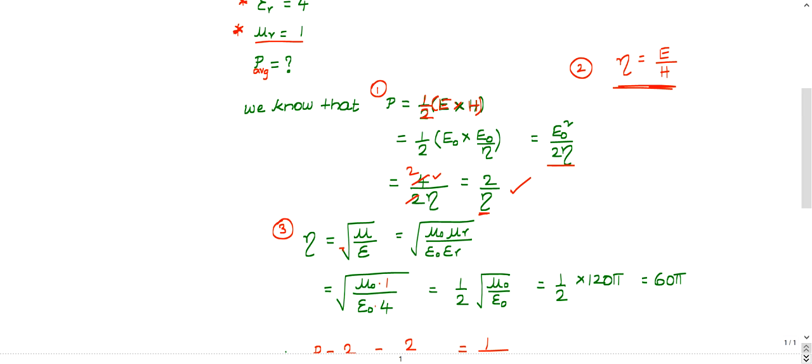μr is given as 1. I substituted 1. And εr 4 I substituted. Then under root 1 by 2 will come out. Then under root μ₀ by ε₀. This is a standard value. It is nothing but characteristic impedance of the air medium. It is nothing but 120π. It is a standard result. 1 by 2 into 120π is nothing but 60π.